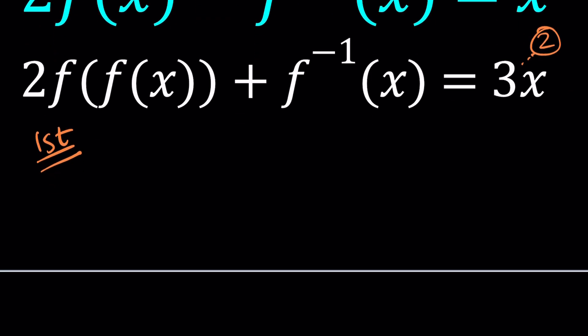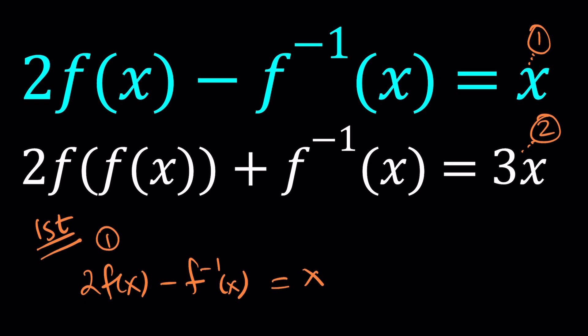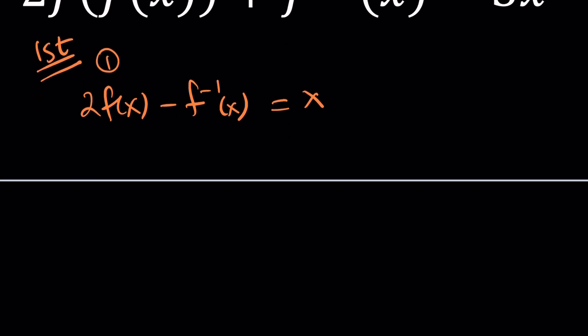So using equation number one, which is 2 times f of x minus f inverse of x equals x. By the way, since I gave you a system like this with f inverse, that means f is invertible. It's a bijection. So we're going to try to solve for f of x. And here's what I'm going to do first: I will replace x with f of x. Why? Because that'll give me f of f of x here, and things will cancel out here.